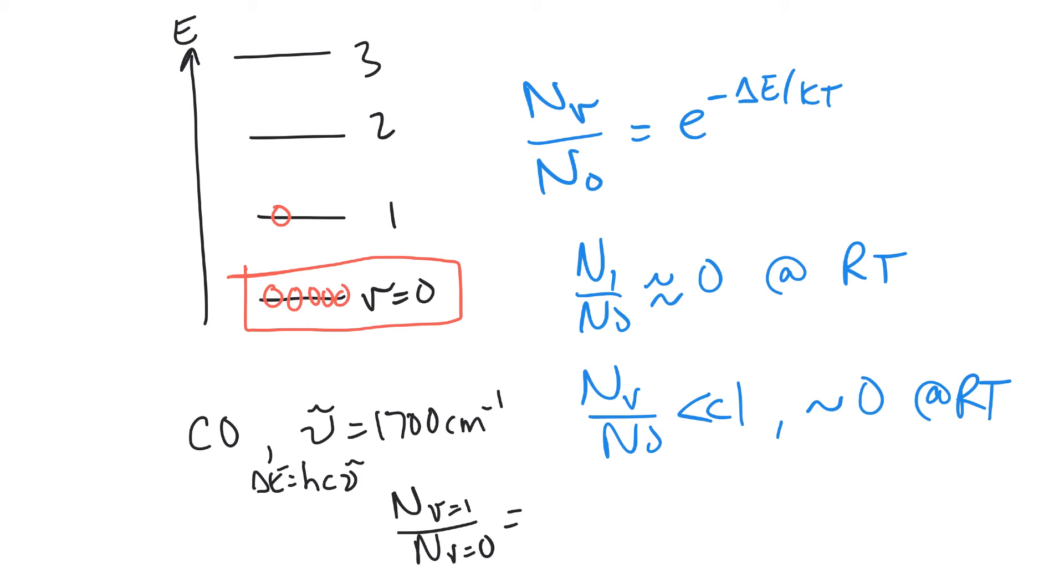And we can calculate that. So if we calculate N for V equals 1 compared to N for V equals 0, it is just equal to e to the minus hC times 1,700 wave numbers. And if we do that over T equals 298 Kelvin, and we plug in values for h and for C and for k, what we end up getting is something like 0.00027. So that tells us that essentially 0.027% of this carbonyl group is in the V equals 1 level. That means that 99.973% is in V equals 0. So essentially all of it, 99.97% of it, is in the ground vibrational state.